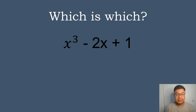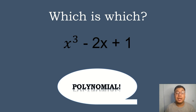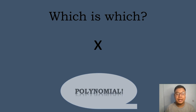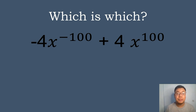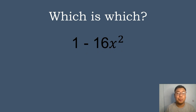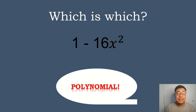How about x cubed minus 2x plus 1? Is it a polynomial or not? The correct answer is it is a polynomial. Next, how about x? The correct answer is it is a polynomial. How about the expression negative 4x to the negative 100 power plus 4x to the 100 power? The correct answer is it is not a polynomial. How about the expression 1 minus 16x squared? The correct answer is it is a polynomial expression.